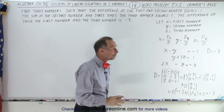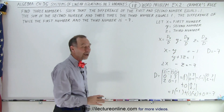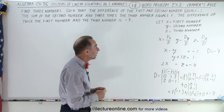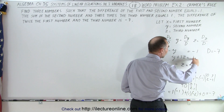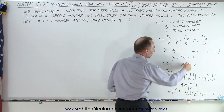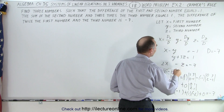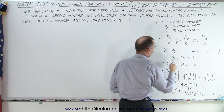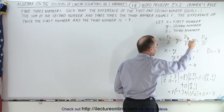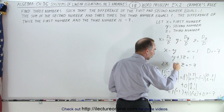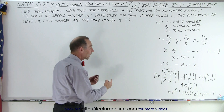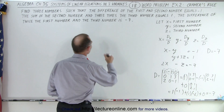Now we need to find D sub x, D sub y, and D sub z. The way that's done: take the three constants on the right side of the equations — negative 1, 1, and negative 7 — and replace the first column to get D sub x, replace the second column to get D sub y, and replace the third column to get D sub z. Then evaluate each determinant.